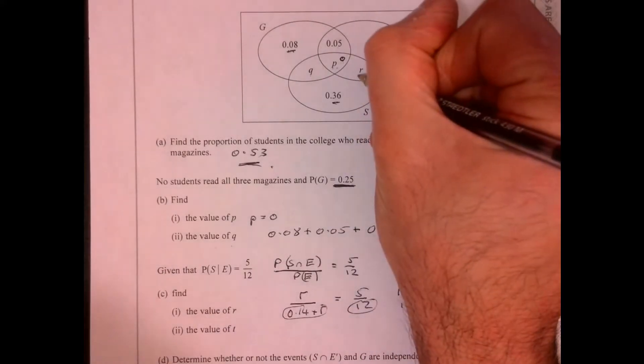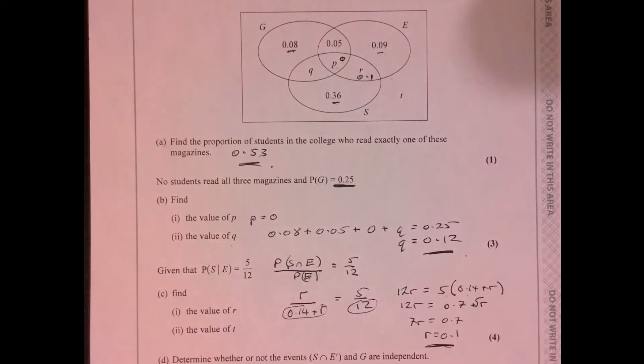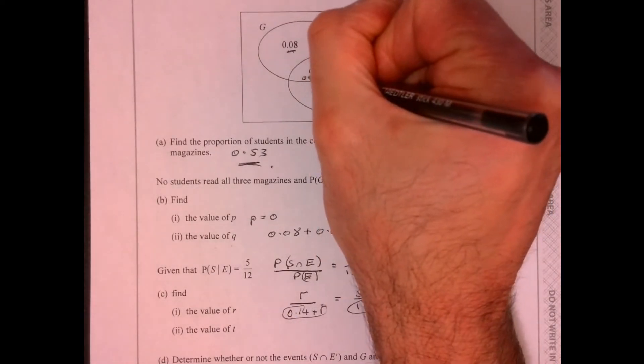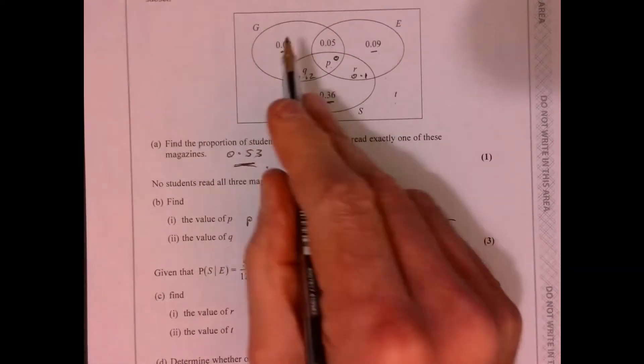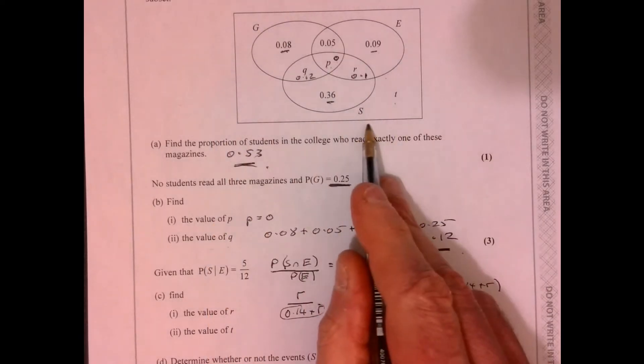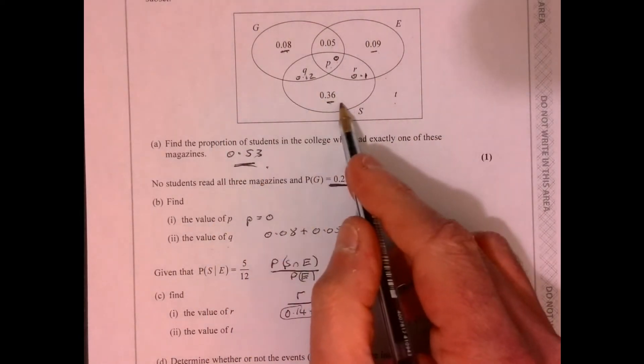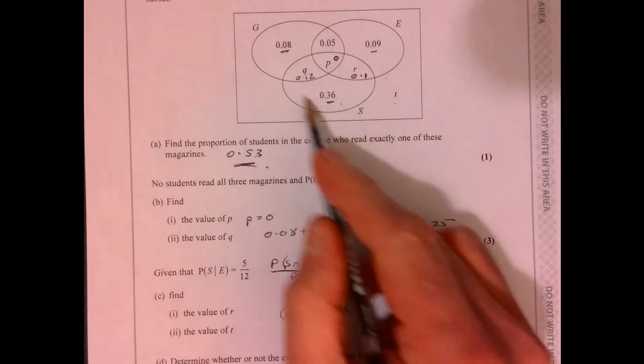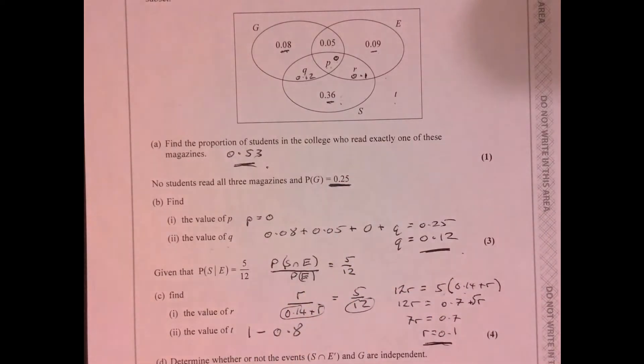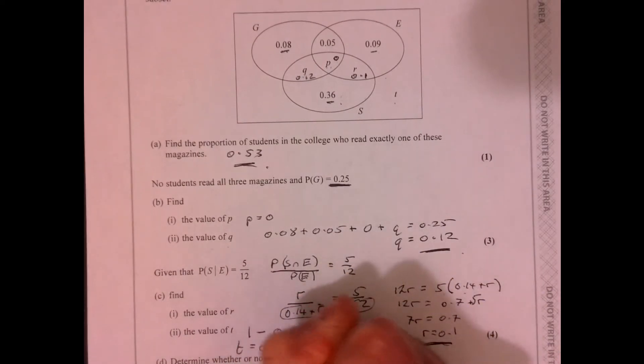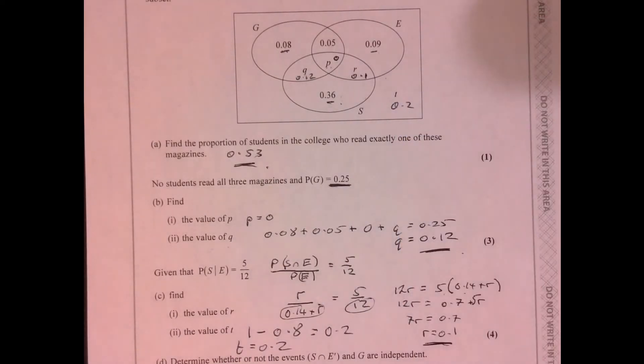So it's always worth just going up to the diagram, just putting in stuff as you work it out. Oops, I didn't put the Q in, did I? Let's put that in as well. Right, now we need to work out T. Well, what do we know? We know that everything all together adds up to 1. We've got all the stuff inside. So if we add all of that together and take it away from 1, I think if you add all that lot together, it's 0.8. So if we do 1 take away 0.8 is 0.2. T equals 0.2. Let's pop it on our diagram.